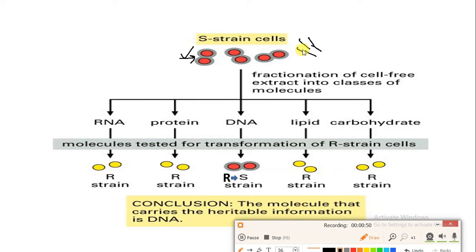All these fragments were then purified. So here, RNA was purified, protein was purified, DNA was purified, lipid was purified, and carbohydrate — all these things were purified.